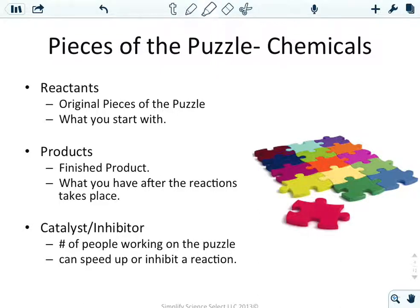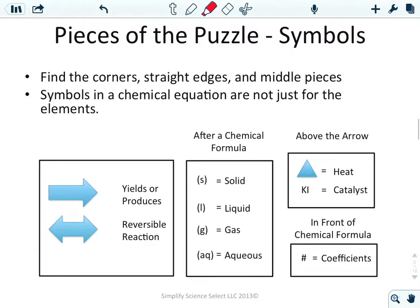The pieces of the puzzle: reactants are the original pieces — what we start with at the beginning. Products are the finished result — what we have left over after the reaction takes place. We also have catalysts and inhibitors, which are like the number of people working on the puzzle. They can speed up or slow down a reaction, but they're not really involved in the actual products or reactants.